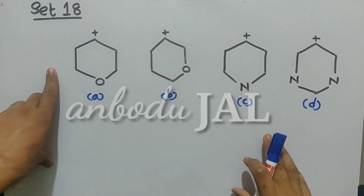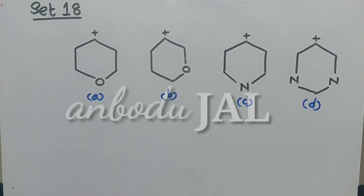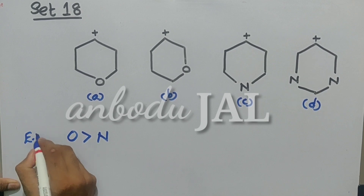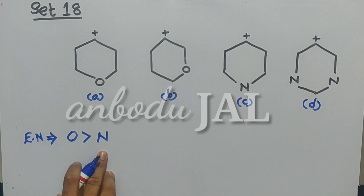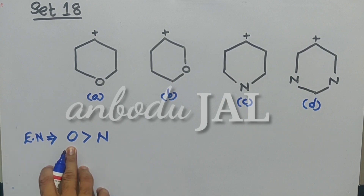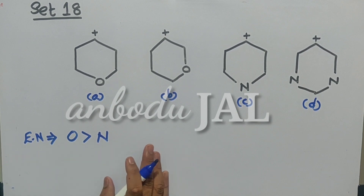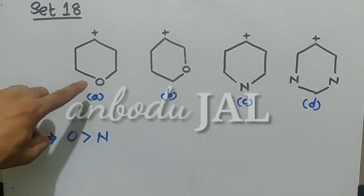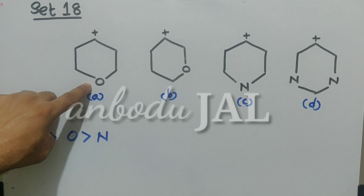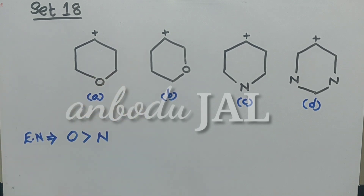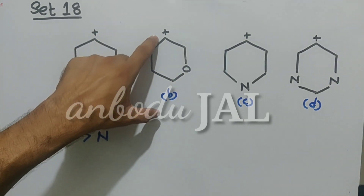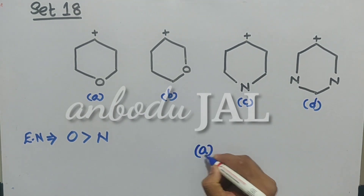In set 18, the considering factor is inductive effect. We know that oxygen is more electronegative than nitrogen, so oxygen withdraws electrons with more power than nitrogen. Considering species A and B: in A, the distance between positively charged carbon and oxygen is maximum, so the minus I effect of oxygen will be minimum in A compared to B. The magnitude of positive charge will be less in A than in B. So A is more stable than B.